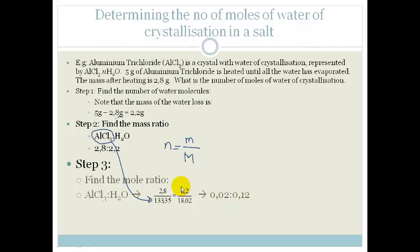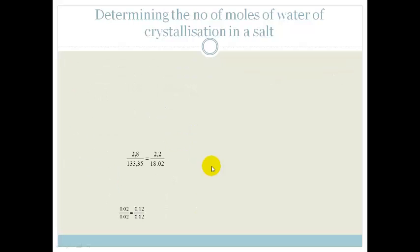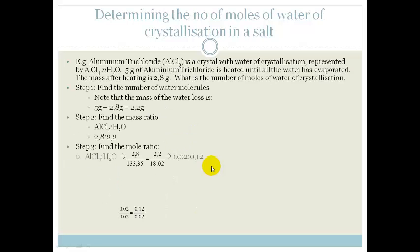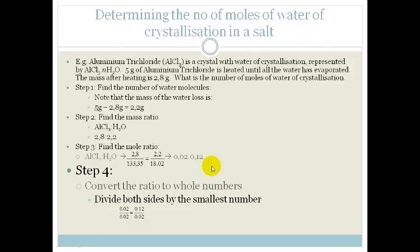So now what we have is a mole ratio. First we found the mass ratio. Then we found the mole ratio. Now what we have to do is convert the ratio to whole numbers. So we're going to divide both sides by the smallest number. 0.02 divided by 0.02 and 0.012 divided by 0.012 and you get a ratio of 1 to 6.